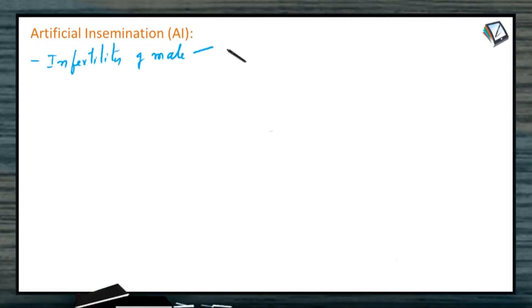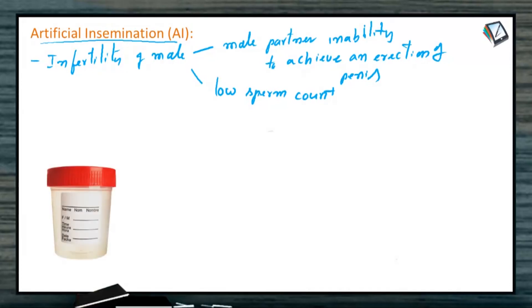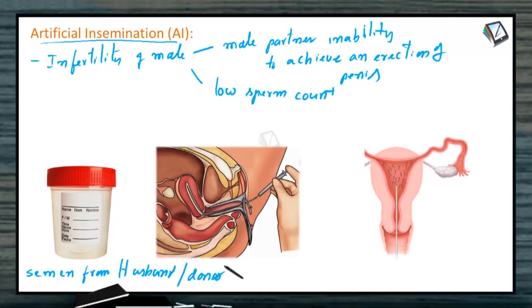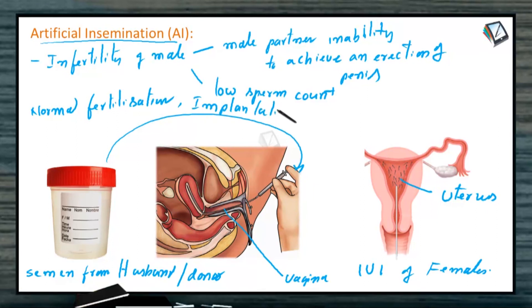Artificial insemination is used when male infertility is due to an inability to achieve an erection, inability to inseminate the female, or very low sperm count in the semen. In artificial insemination, semen is collected either from the husband or a donor and is artificially introduced into the vagina or uterus of the female — this is also called intrauterine insemination. Later, inside the female, normal fertilization and implantation take place, and the blastocyst completes the gestation period and a baby is born.